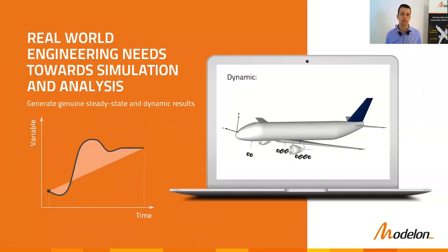I call these the real-world engineering needs in simulation and analysis. The focus here is on the relevant segment: analytic modeling or architecture-level simulation. The first need sounds fairly basic, but it's really fundamental. People want to have steady-state and dynamic simulation in the same tool, and that is required because as products become more complex and sophisticated, you need to predict any relevant behavior.